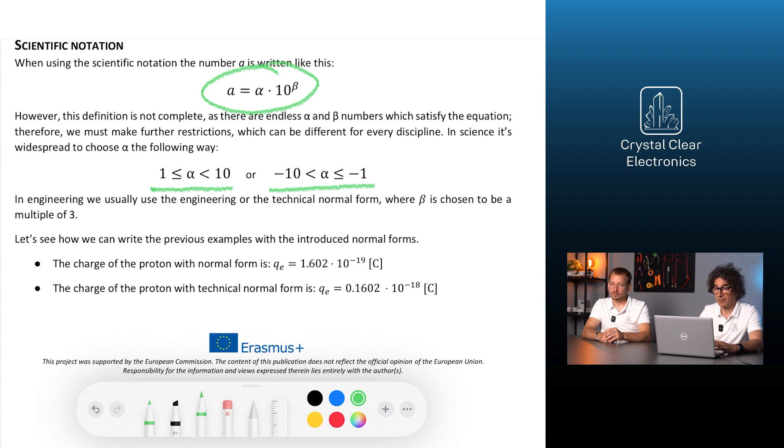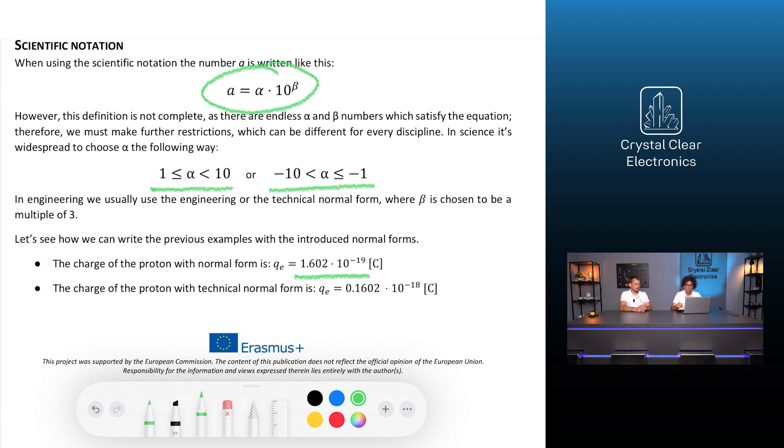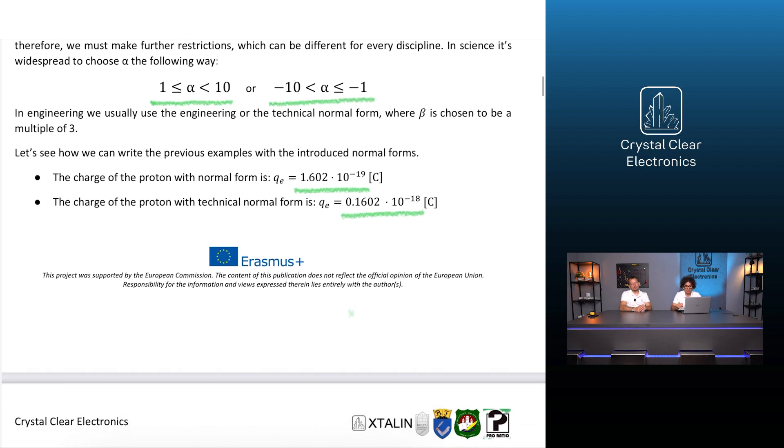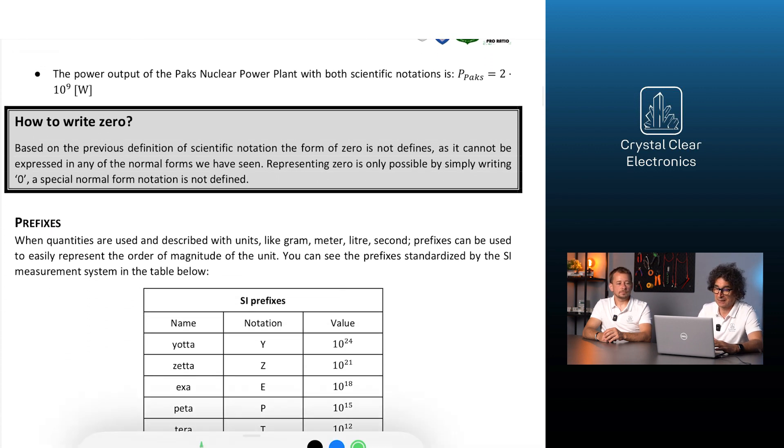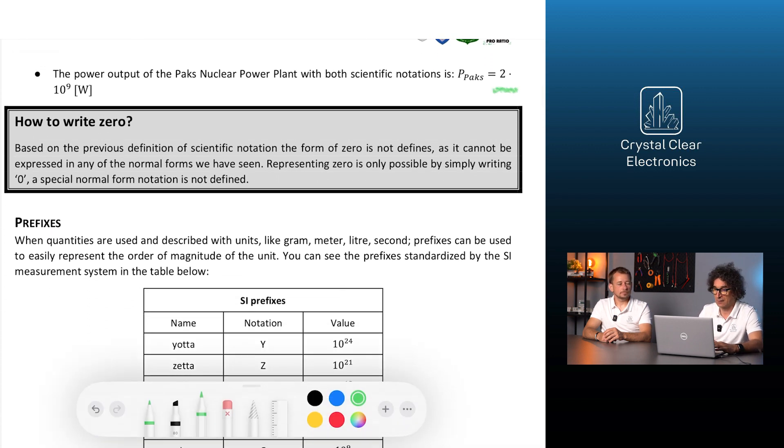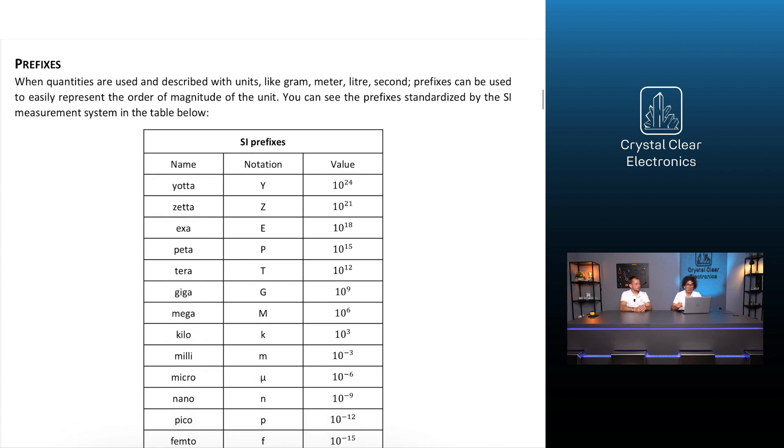Let's see how we can write the previous examples with the introduced normal forms. The charge of the proton with normal form is Q sub E equals 1.602 times 10 to the negative 19 coulombs. The charge of the proton with technical normal form is Q sub E equals 0.1602 times 10 to the negative 18 coulombs. The power output of the Pux nuclear power plant with both scientific notations is P sub Pux equals 2 times 10 to the ninth watts.